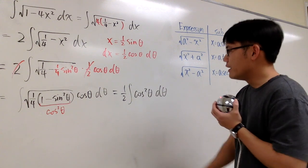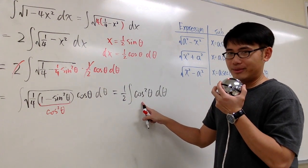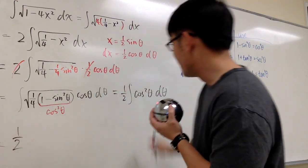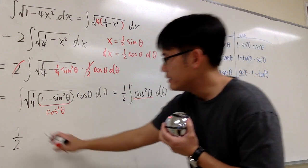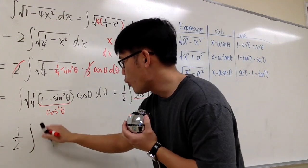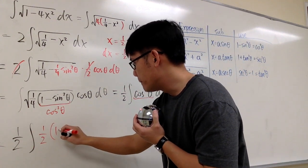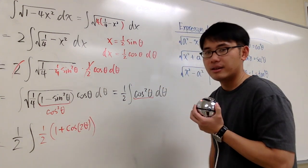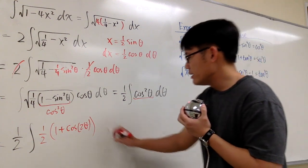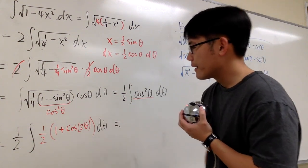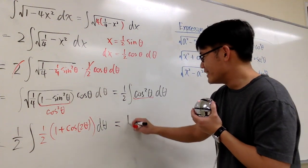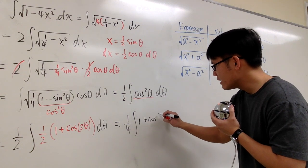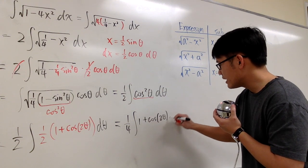Now the question is how to integrate this. We use the power reduction formula from trigonometry. For cos²θ, we apply (1/2)(1 + cos2θ). The 1/2 comes out front, giving us (1/4) times the integral of (1 + cos(2θ)) dθ, and now we are ready to integrate.